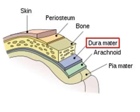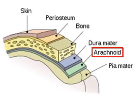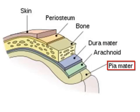The dura mater is the outermost layer of the meninges and literally translates to 'tough mother' in Latin. Next is the arachnoid mater, which is a delicate fiber mesh interposed between the dura mater and pia mater. Finally, there is the pia mater, which is firmly adherent to the surface of the brain.